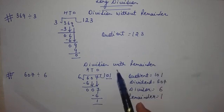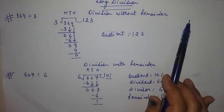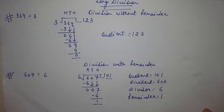So this is the example of division with remainder and this is example of division without remainder. I hope both the concepts are clear to you. Thank you.